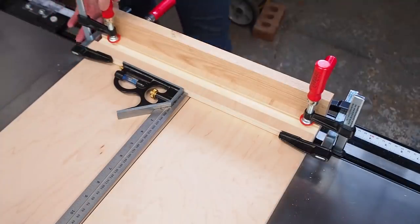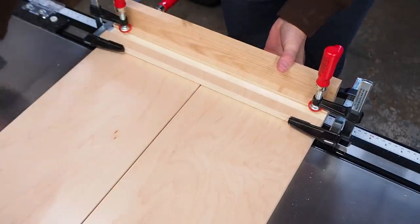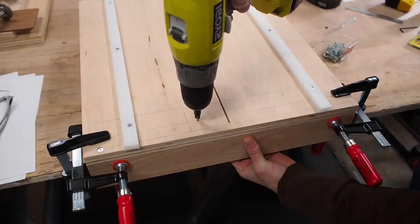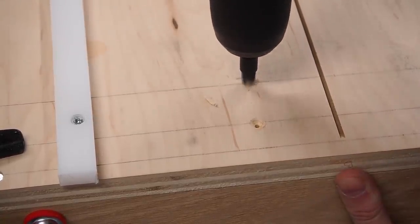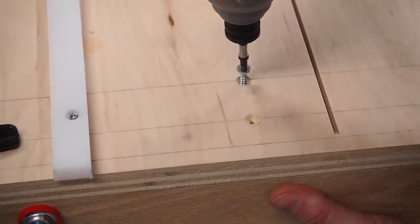Once I was happy with it I clamped it down so I could flip the sled over and countersink some screws. Now this is where those lines come in handy so you'll know exactly where to put the screws without potentially hitting the t-track.